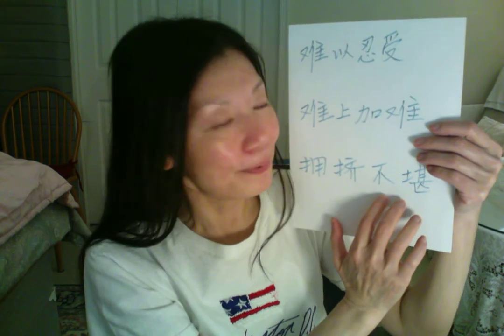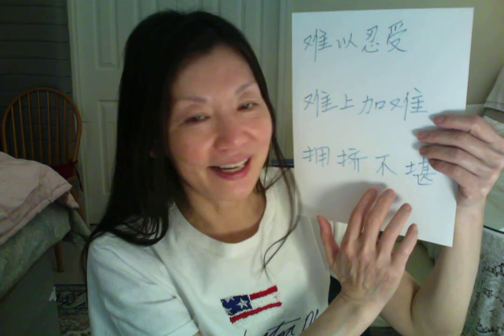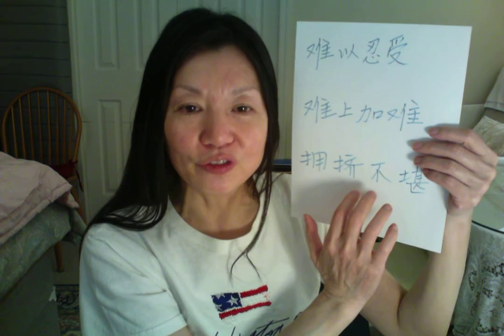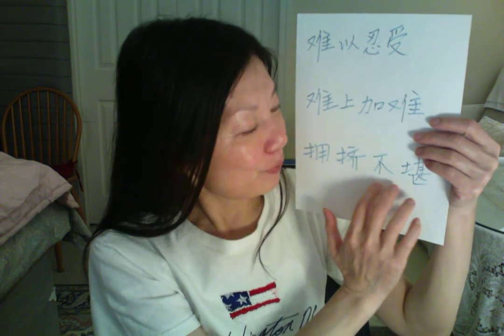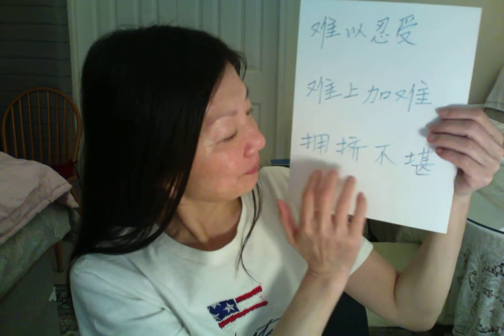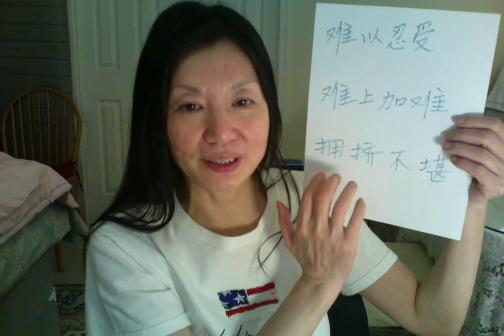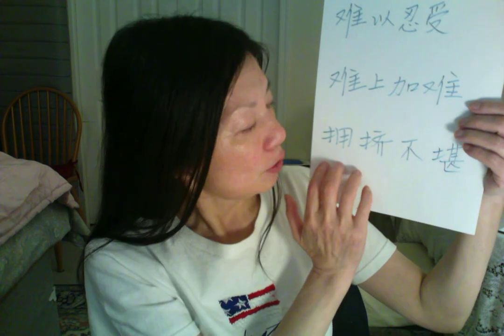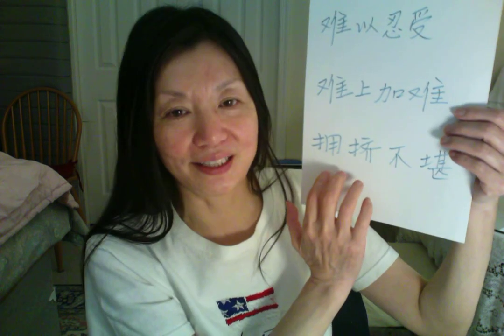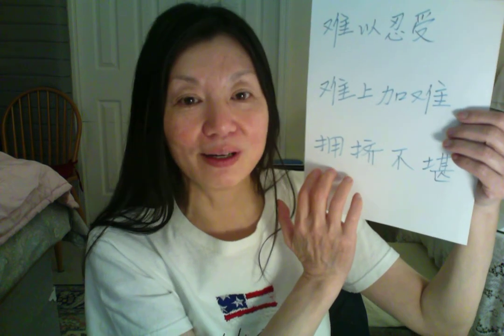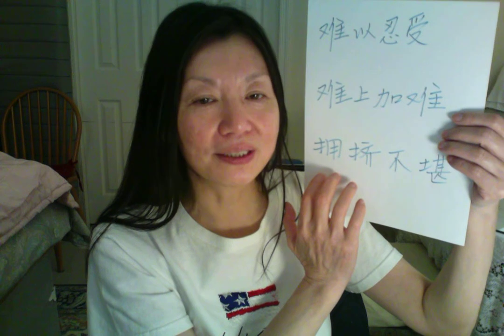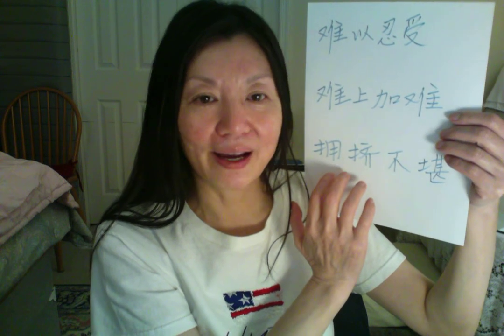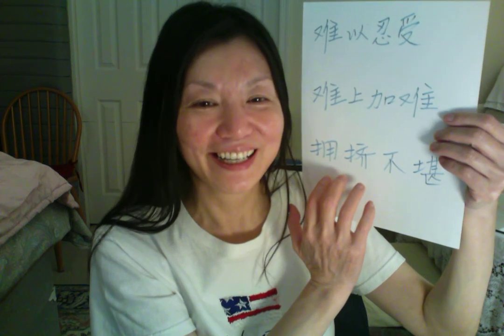Next: 拥挤不堪 (yōng jǐ bù kān). 不堪 means unbearable to look at — it's a sight that makes you feel uncomfortable. 什么让你觉得看了不舒服, 不高兴, 不喜欢? 拥挤 means too many people crowded together. When you see it, 真是拥挤不堪 — you don't like what you see.